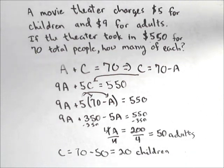So we have 50 adults and 20 children in attendance. Setting that up is very typical — you have an amount equation and a value equation, and you can use any of your methods to solve.